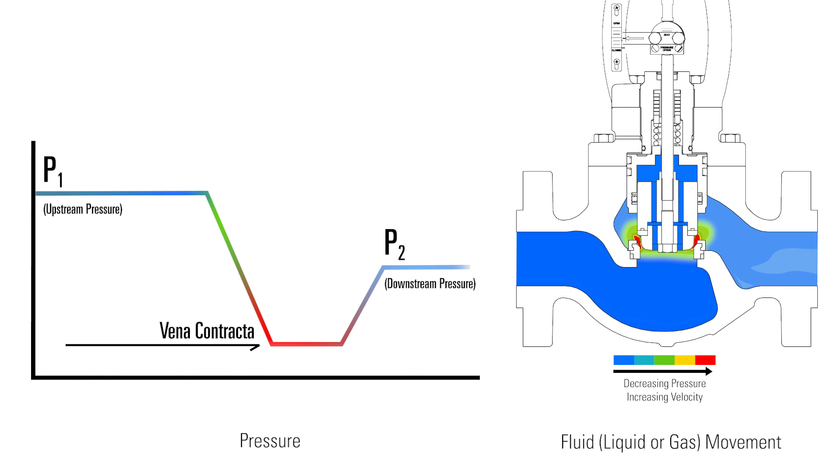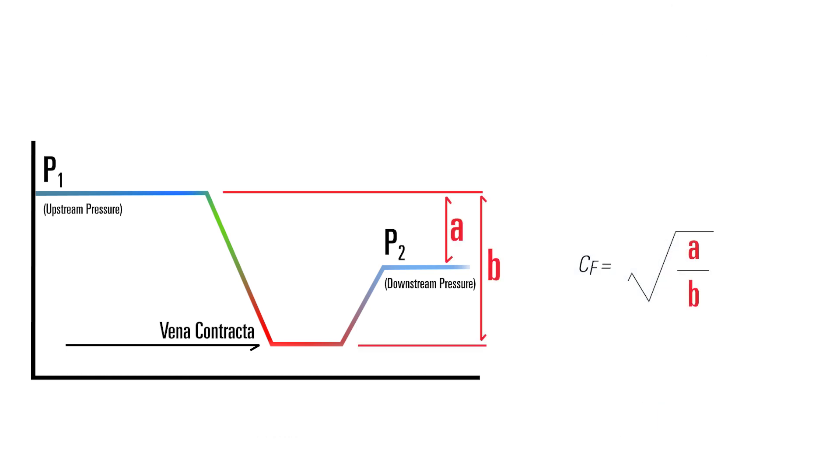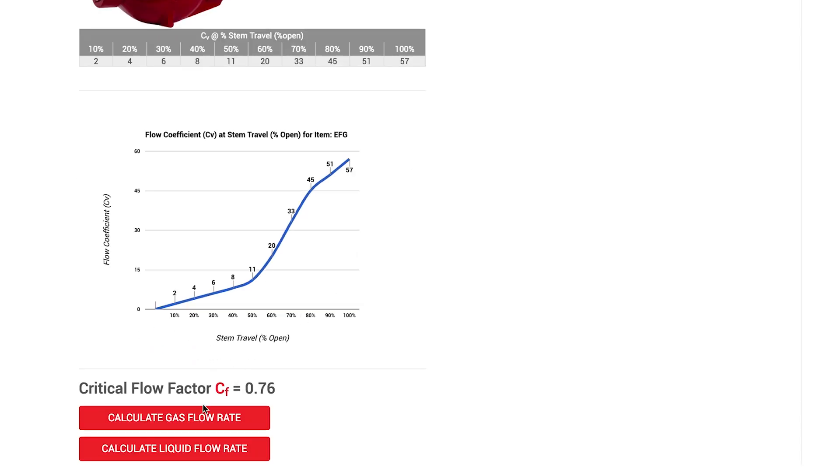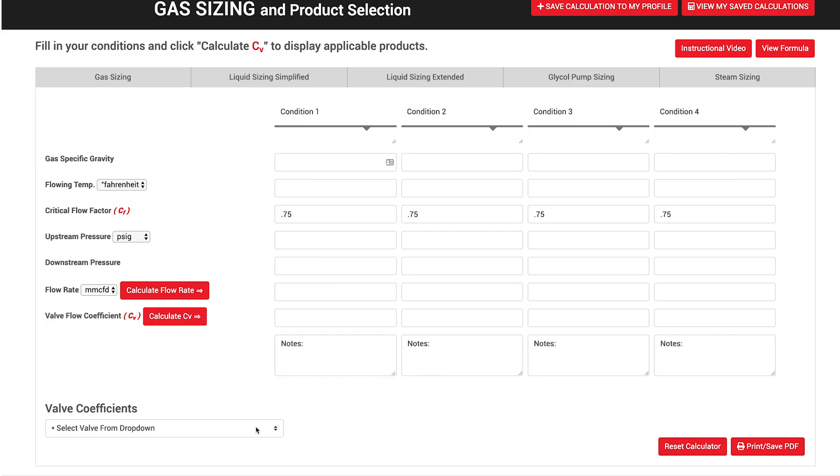Kimray calculates the critical flow factor based on this pressure recovery, using the formula shown here. You can find the CF for each valve on the product detail page or on the sizing page under the valve coefficients drop-down menu.